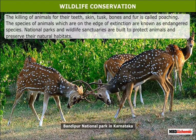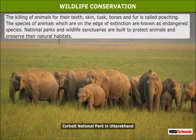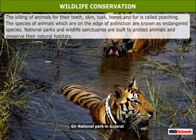The killing of animals for their teeth, skin, tusks, bones, and fur is called poaching. National parks and wildlife sanctuaries are built to protect animals and preserve their natural habitats. Famous national parks in India include Bandipur National Park in Karnataka, Corbett National Park in Uttarakhand, and Gir National Park in Gujarat.